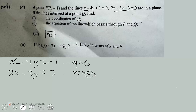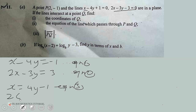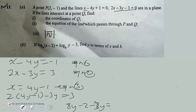Now we need to solve for x and y. Let's make x the subject in the first equation: x equals 4y minus 1. We call this equation 3. We substitute equation 3 into equation 2, giving us 2(4y minus 1) minus 3y equals 3. Expanding: 2 times 4y is 8y, minus 2, minus 3y equals 3.